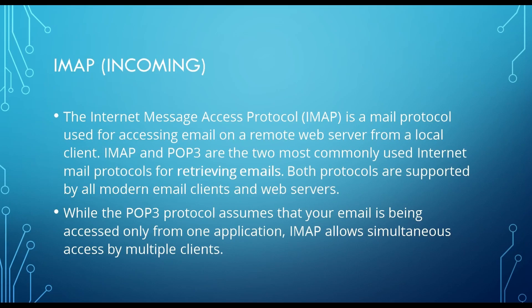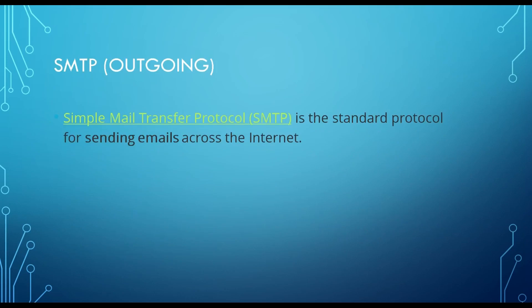Now that you are clear about POP3 and IMAP protocols, let's look at SMTP. SMTP helps to automate your outgoing email transitions. The full form of SMTP is Simple Mail Transfer Protocol — it is a standard protocol for sending email across the internet. Suppose there is a requirement for sending a mail from your Gmail to some other email ID; you can use this SMTP protocol or the SMTP activity in UiPath for doing that automation.